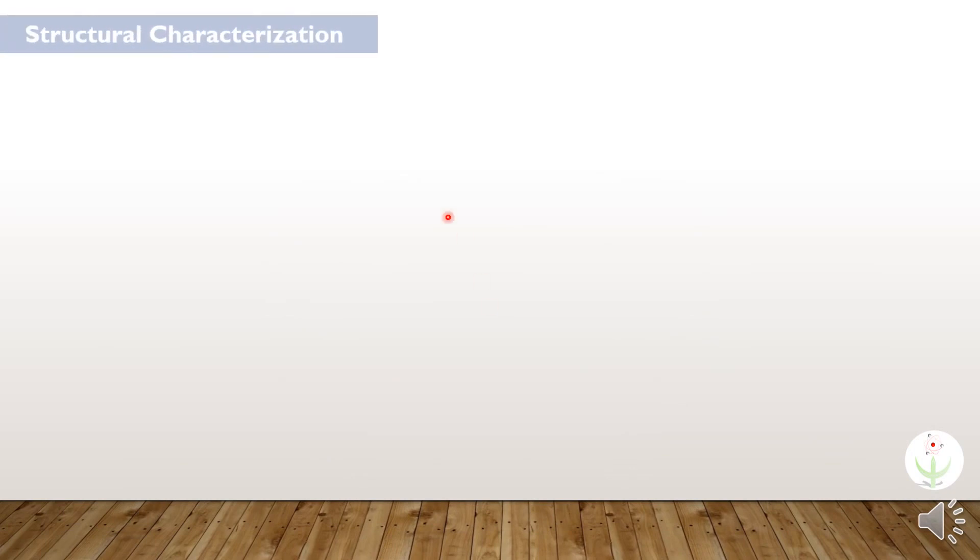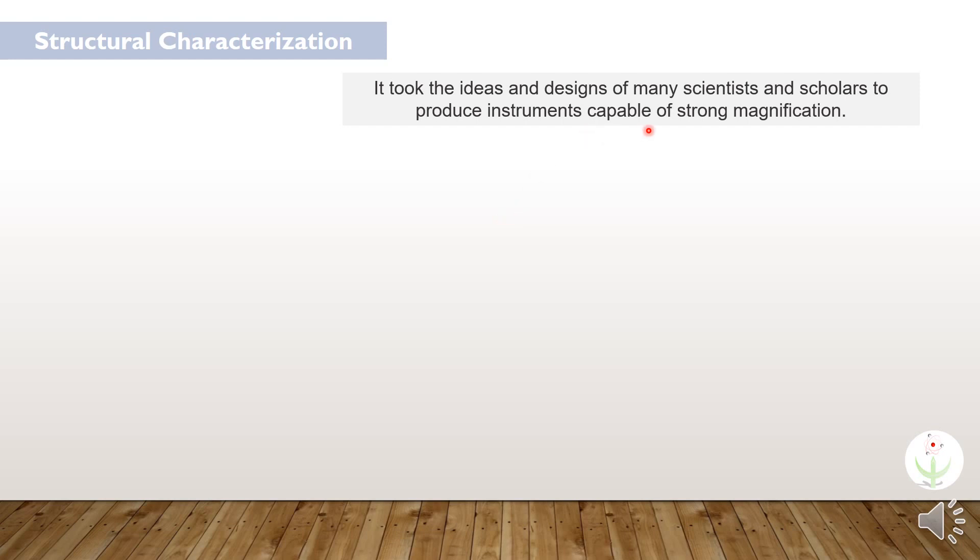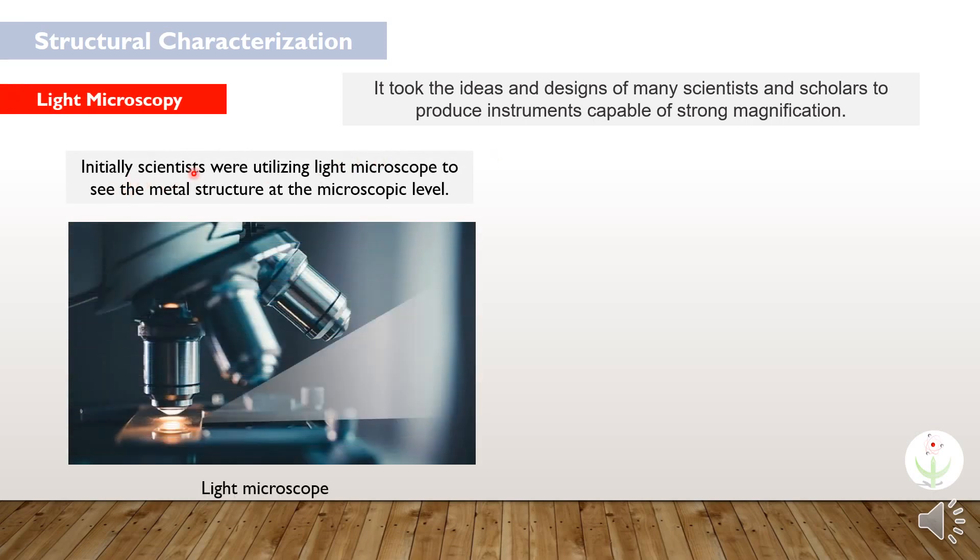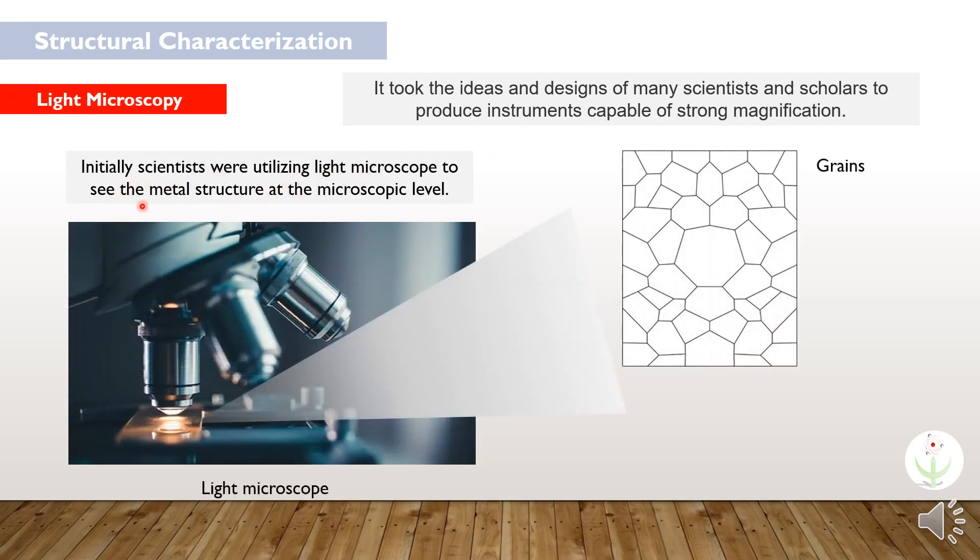Let's begin this course from structure characterization. It took the ideas and designs of many scientists and scholars to produce instruments capable of strong magnification. So initially scientists were utilizing light microscope to see the metal structure at the microscopic level.